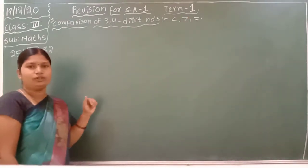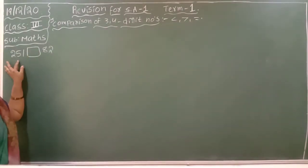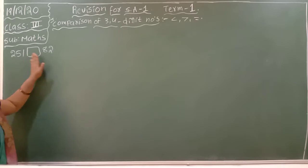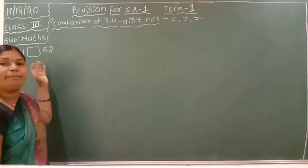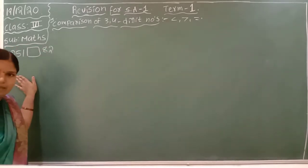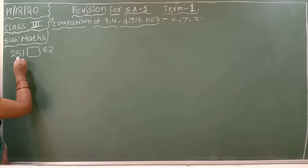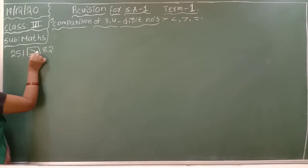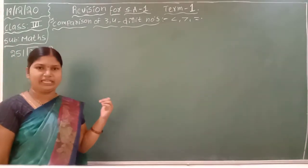Here I have given first 251 — it is a 3-digit number — and 82, it is a 2-digit number. Compare these two numbers: which is the big number? The 3-digit number is the big number. So this number side keep open, small number side close. It is known as greater than.